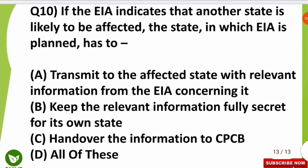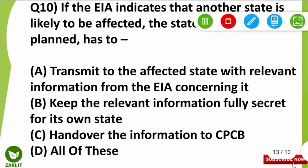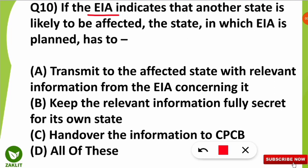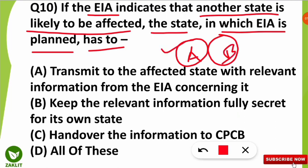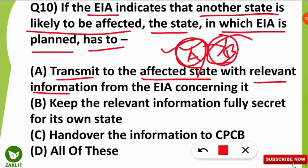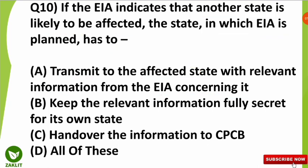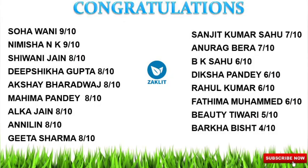The tenth question was from Environmental Impact Assessment (EIA). If the EIA indicates that another state is likely to be affected, what must the state in which the EIA is planned do? Taking states A and B as an example — if A plans a project and EIA shows that B will be affected, then state A must transmit this data and relevant information from the EIA to the affected state B.